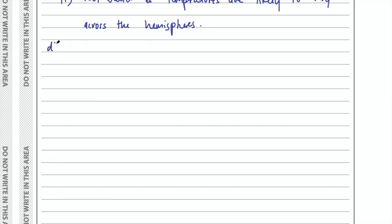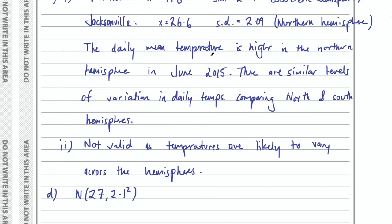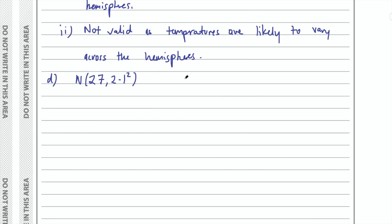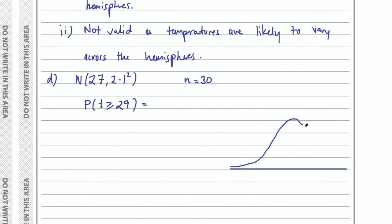This is a fairly standard question about a normal distribution. We have a mean of 27 and standard deviation of 2.1. We're going to look for the probability that the temperature is greater than 29. Our sample size is 30 summer days — N equals 30. We're looking for the probability that the temperature is greater than or equal to 29, since 29 was also considered too hot. Graphically, we're looking for the area under the normal curve above 29.